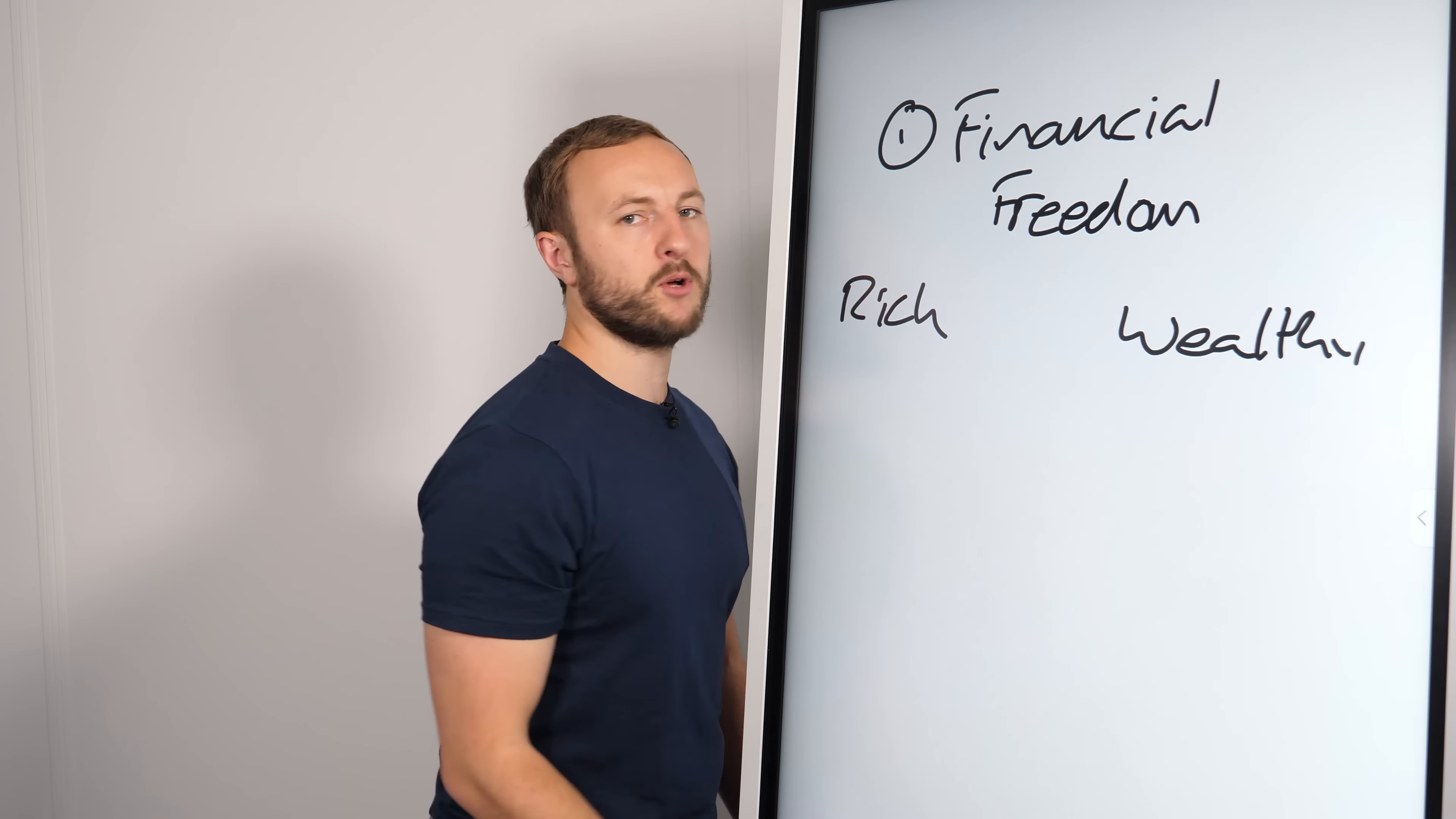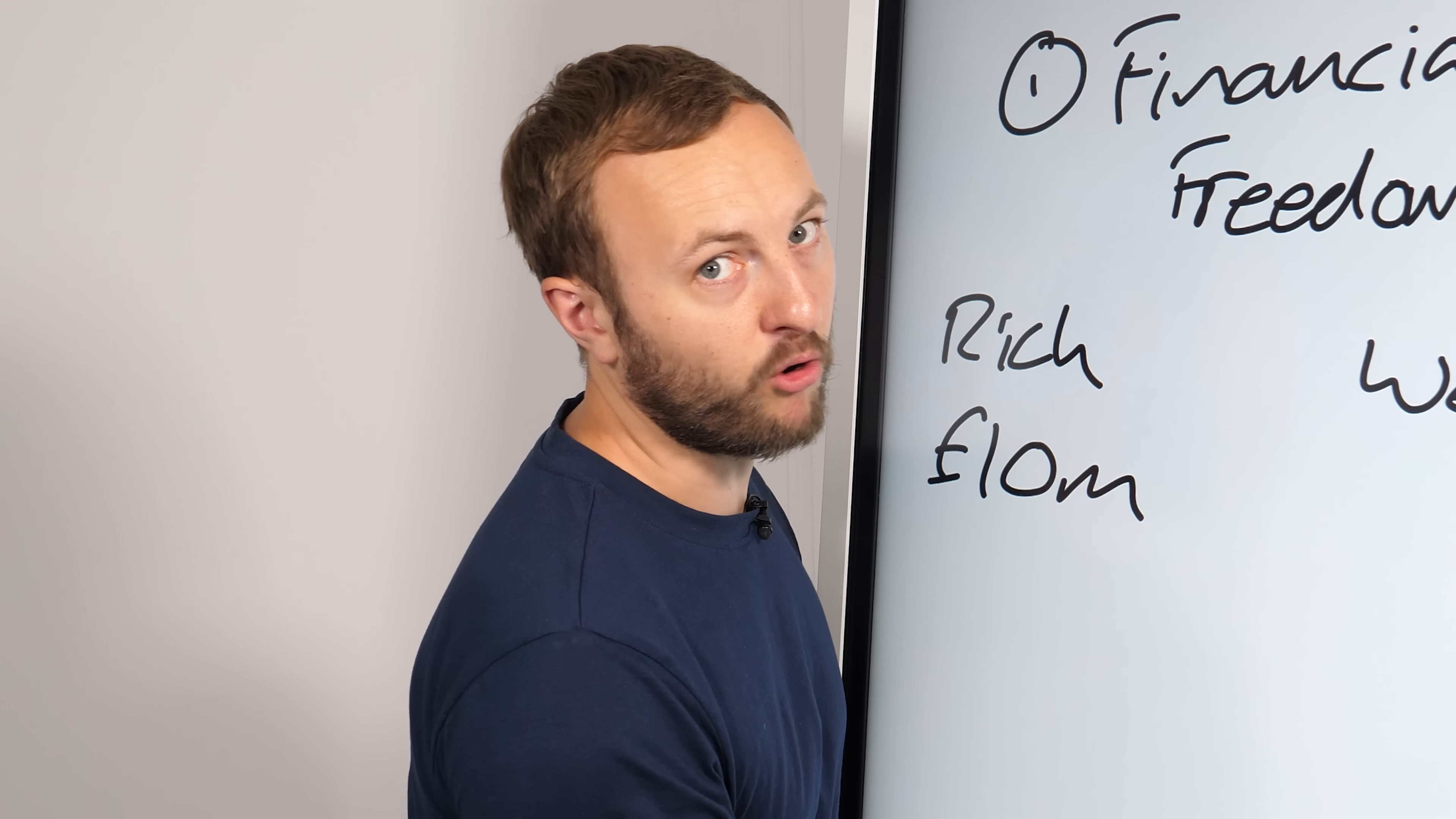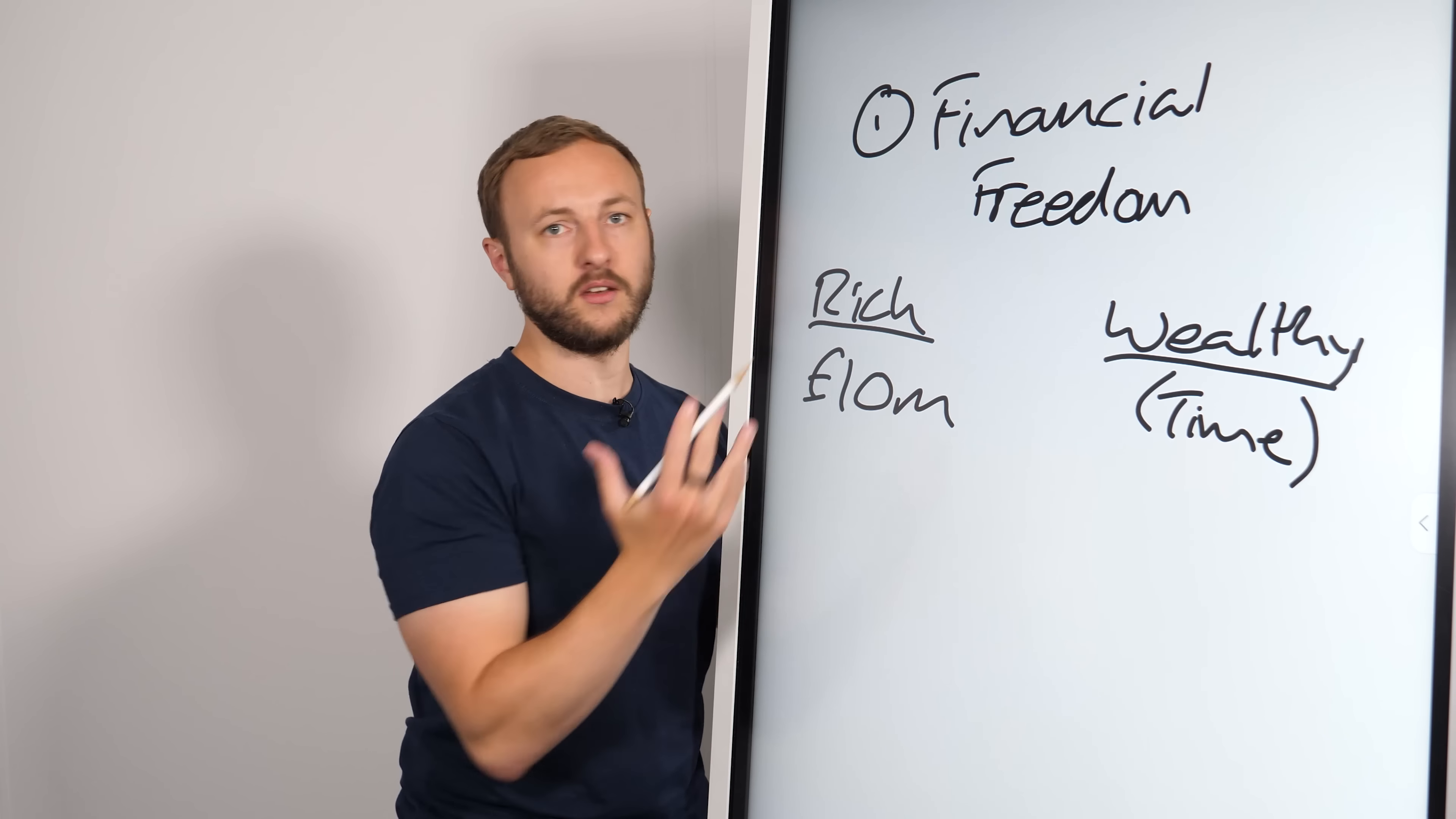Rich is how much money have you got right now. Let's say you've got 10 million in the bank account right now, or you make 10 million a year. Let's face it, you are pretty bloody rich. Whereas wealthy, you could actually have 50 grand in bank and be wealthy. Let me explain. Wealth is based on time, as is financial freedom.